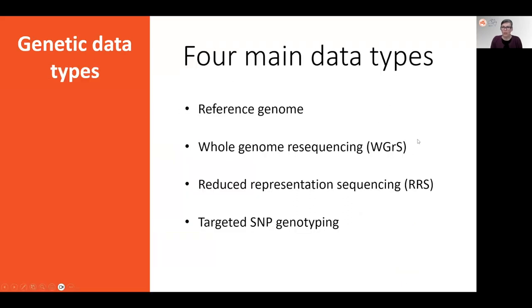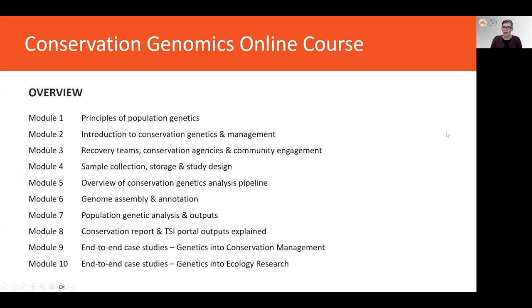That's been a quick overview of the four main genetic data types used in the Threatened Species Initiative. If you're interested in finding out more, please check out the other modules in this series for more information on sample collection and how to use these methods for threatened species genetic analysis.